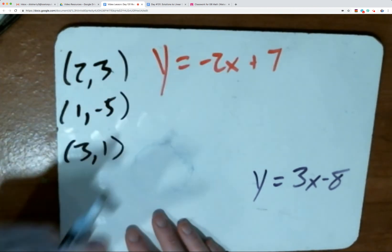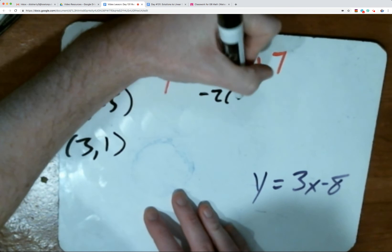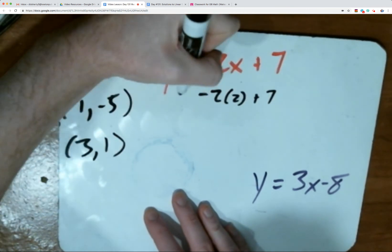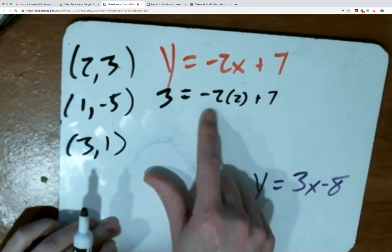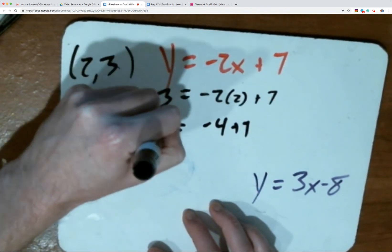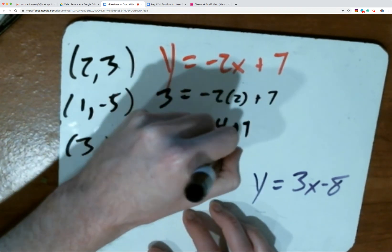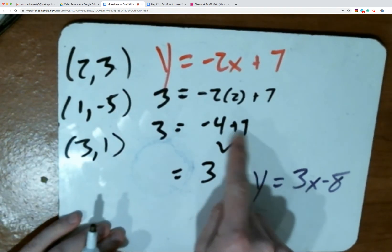So I'm going to replace the x with 2. Negative 2 times 2 plus 7, and that has to equal y, which according to this solution should be 3. Negative 2 times 2 makes negative 4. So this becomes negative 4 plus 7, and negative 4 plus 7 makes positive 3. Same thing as saying 7 minus 4.